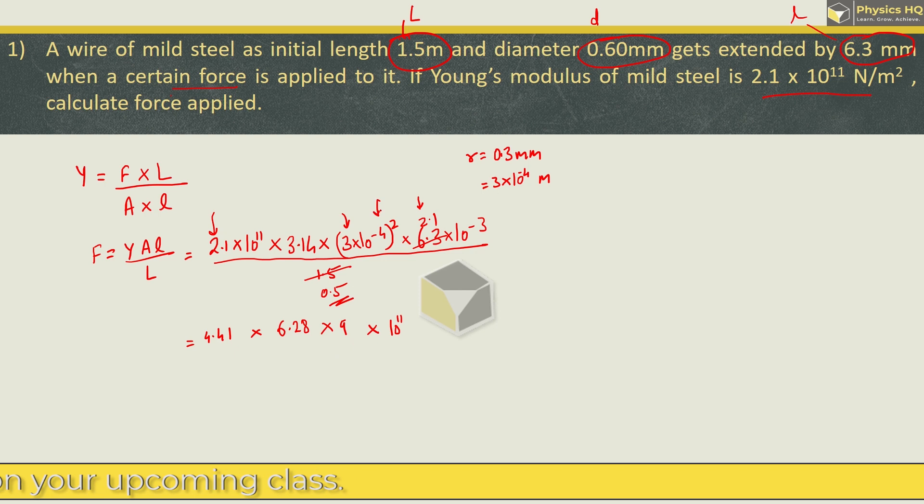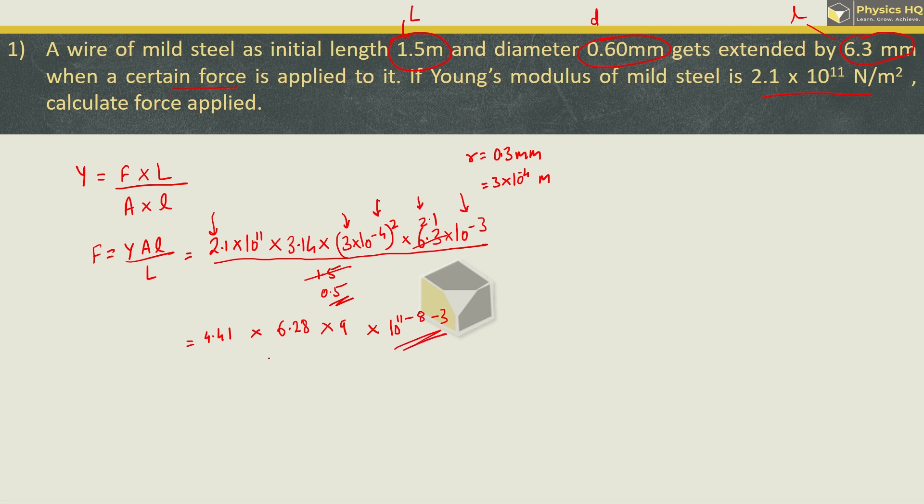10^11, this 10^-4 squared is -8, and 10^-3. So this becomes 10^0 which is 1. When we multiply this, it will be 249.25, which is approximately 250 Newton. Hope you all understood this. Next we will see.